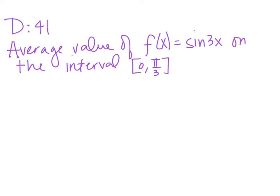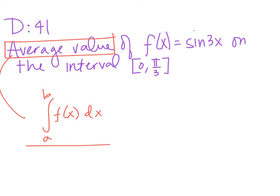Number 41 on the diagnostic asked us to find the average value of f(x) = sin(3x) on the interval from 0 to π/3. Average value is the integral from a to b of f(x) dx all over (b − a). We use that formula if they ask us to find average velocity and we don't know the position function — we can integrate the velocity from a to b over (b − a) because the integral of velocity is the change in position.